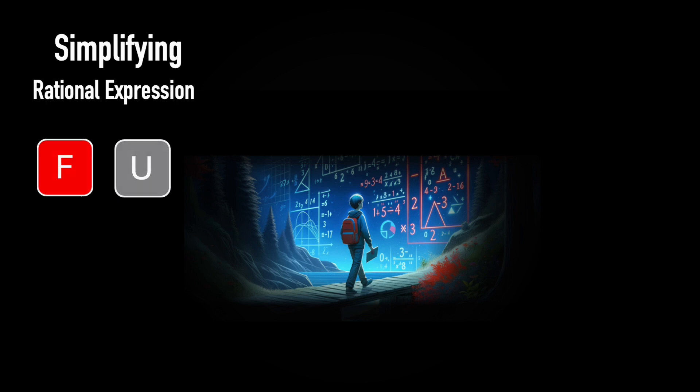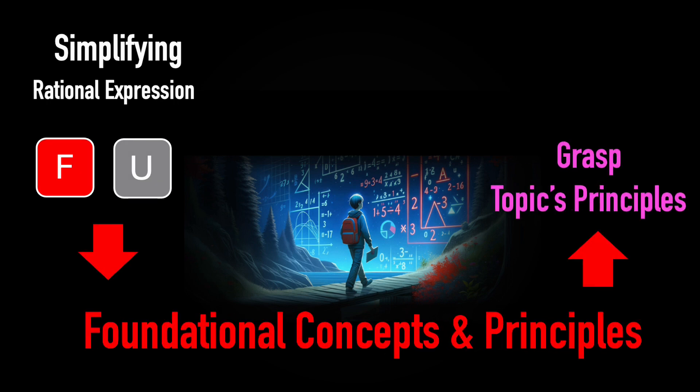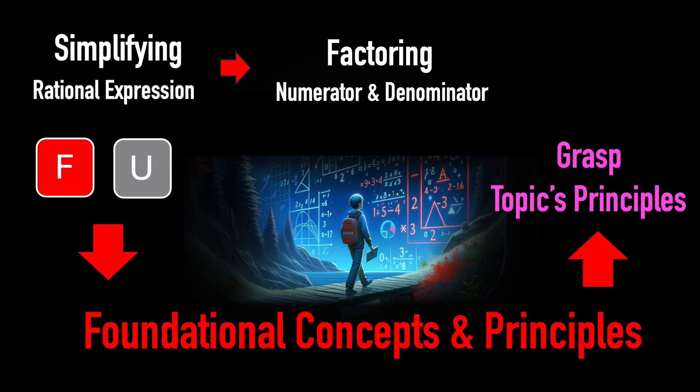First, use the F and U buttons to quickly grasp the topic's principles, factoring the numerator and denominator, then canceling the greatest common factor.